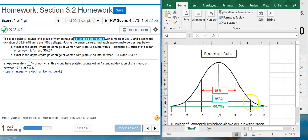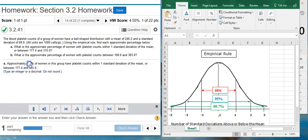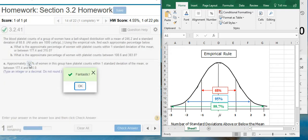So, bell-shaped distribution, one standard deviation of the mean, contains 68 percent of the data. So, I'm just going to put 68 here. Fantastic!